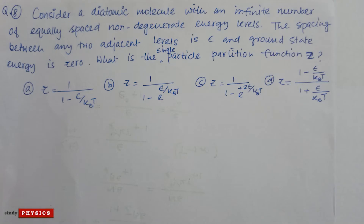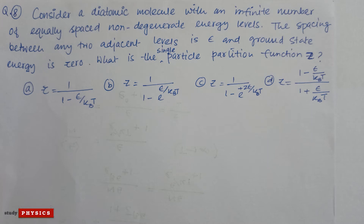Question number eight: consider a diatomic molecule with an infinite number of equally spaced, non-degenerate energy levels. The spacing between any two adjacent levels is ε and the ground state has the lowest energy.